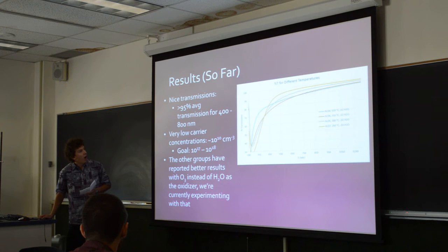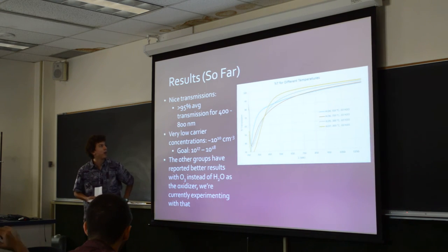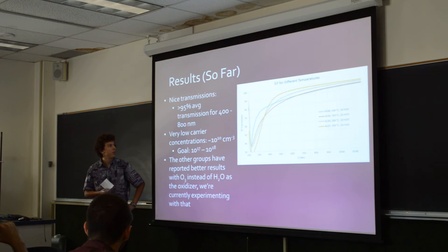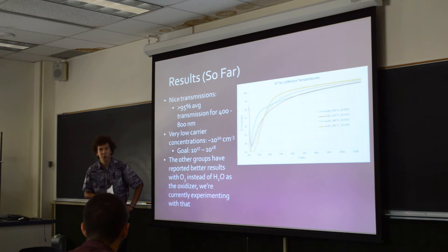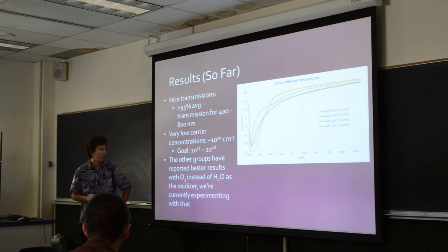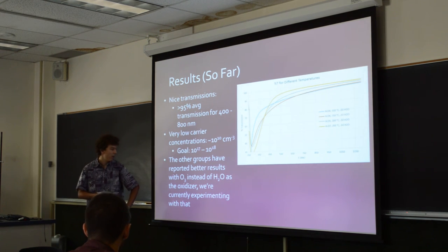So far we're getting pretty nice transmissions. Here are a couple we've taken — the top one has almost 96% average transmission between 400 to 800 nanometers. However, we're getting a very low carrier concentration on the order of 10¹⁰ per cubic centimeter, which is seven or eight orders of magnitude lower than we need. Other groups have also run into this problem using H₂O as a reactant and have reported better results with ozone, so that's what we're currently moving toward.